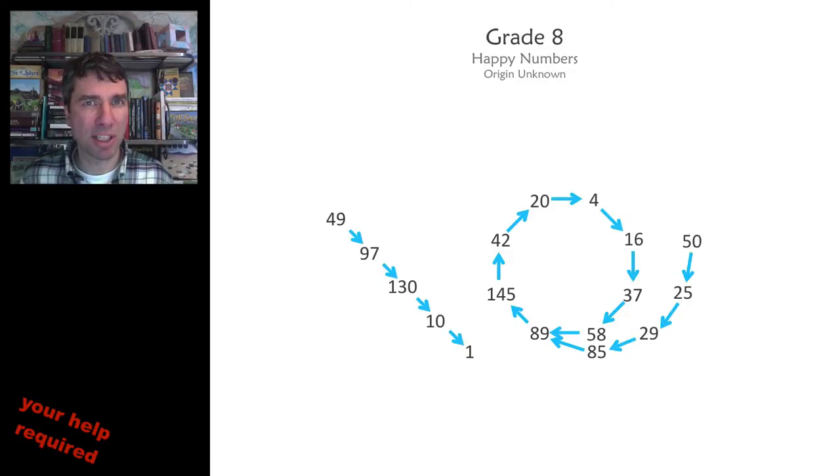Of less interest to mathematicians are problems like this. These are happy numbers if they go to 1. So, 49 goes to 4 squared plus 9 squared. That's 97. 97 goes to 9 squared plus 7 squared. That's 130. 130 goes to 1 squared plus 3 squared plus 0 squared. That's 10.